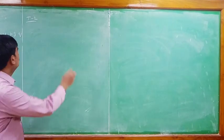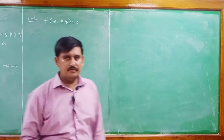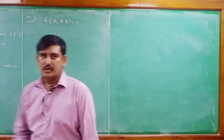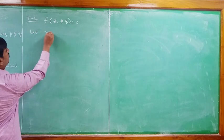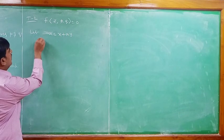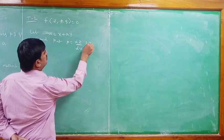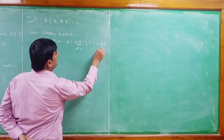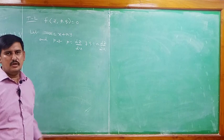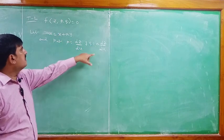Now Type 2: F(Z, P, Q) = 0. To solve this type, let U = X + AY and put P = dZ/dU and Q = A·(dZ/dU). The problem will convert in terms of dZ/dU and Z. Then solve for Z and U using variable separable method.